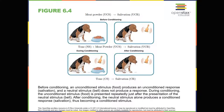In Pavlov's experiments, the dogs salivated each time meat powder was presented to them. The meat powder in this situation was an unconditioned stimulus, or UCS — a stimulus that elicits a reflexive response in an organism. The dog's salivation was an unconditioned response, or UCR — a natural or unlearned reaction to a given stimulus. Before conditioning, meat powder (the unconditioned stimulus) results in salivation (the unconditioned response).